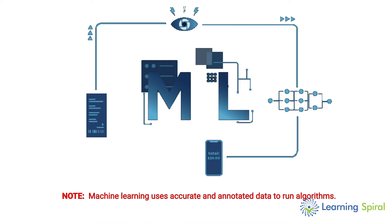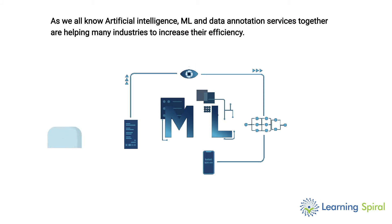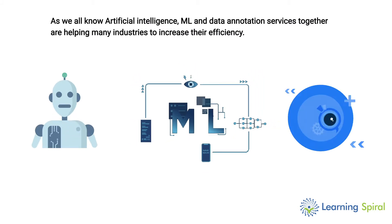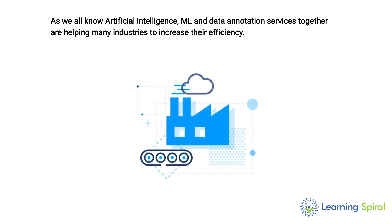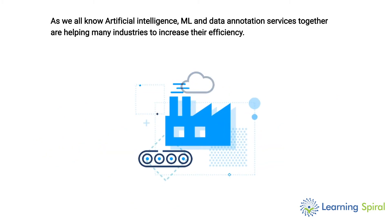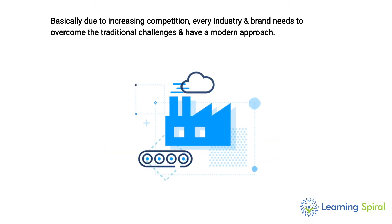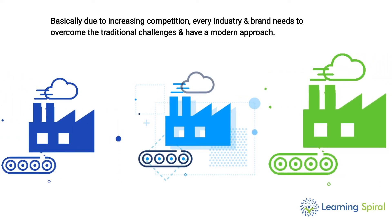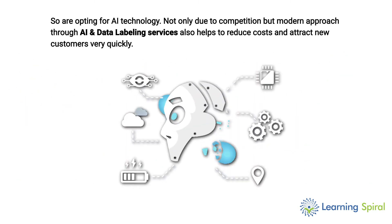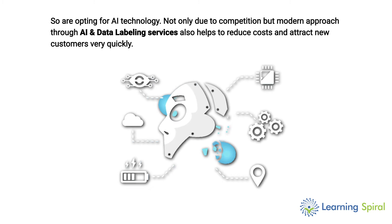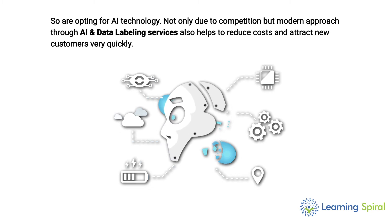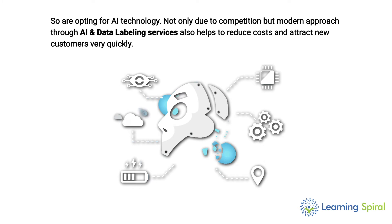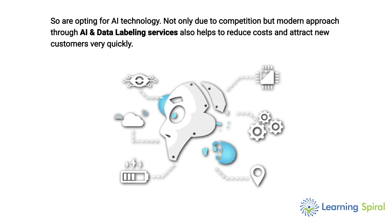Machine learning uses accurate and annotated data to run algorithms. As we all know, artificial intelligence, ML, and data annotation services together are helping many industries to increase their efficiency. Basically, due to increasing competition, every industry and brand needs to overcome traditional challenges and have a modern approach, so are opting for AI technology. Not only due to competition, but a modern approach through AI and data labeling services also helps to reduce costs and attract new customers very quickly.